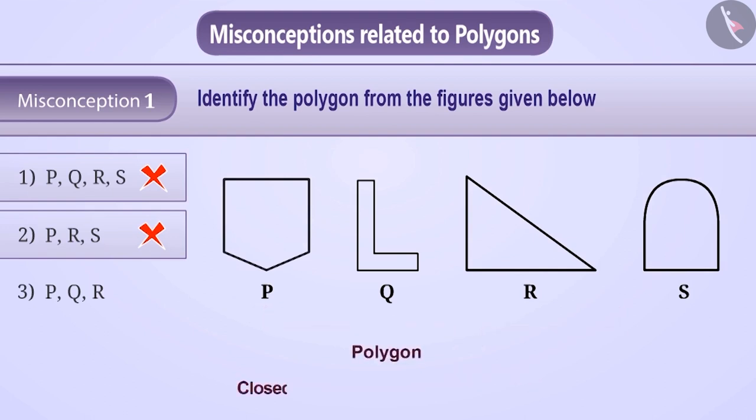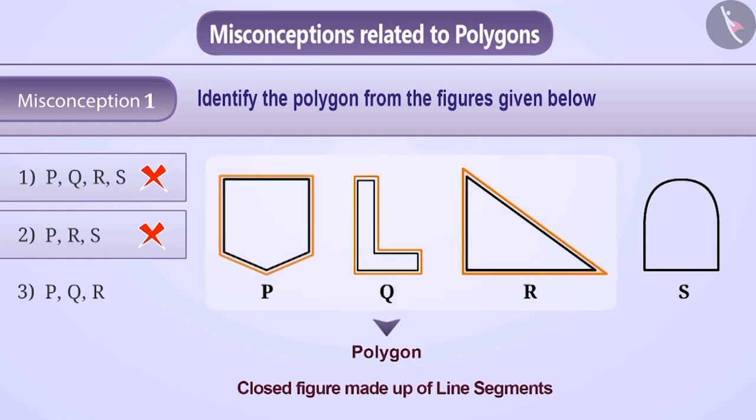Correct understanding is that a polygon is a closed figure made of line segments. In the figures given, P, Q and R are made of line segments, therefore they are polygons. But figure S is not completely made of line segments, therefore it is not a polygon. Hence, in the given figure only P, Q and R are polygons. Therefore, the correct answer of the given question is option 3.